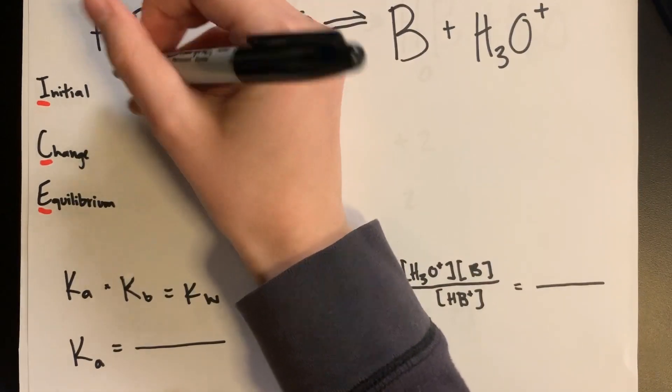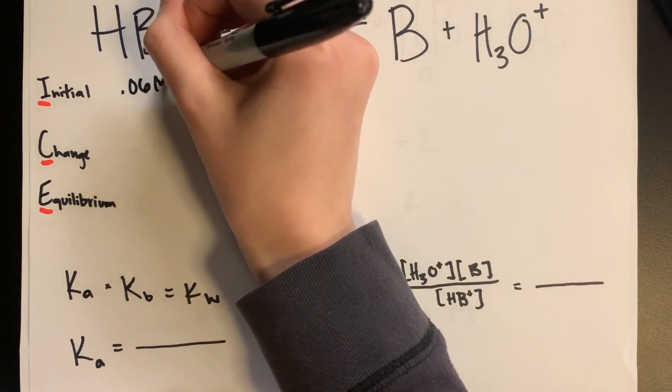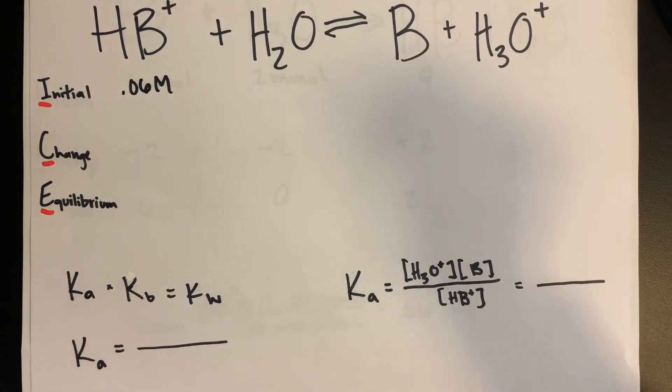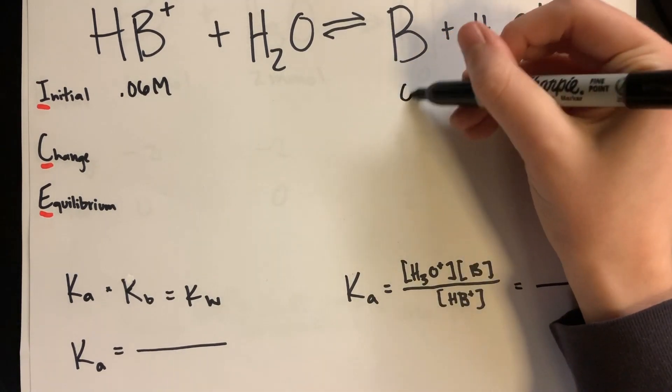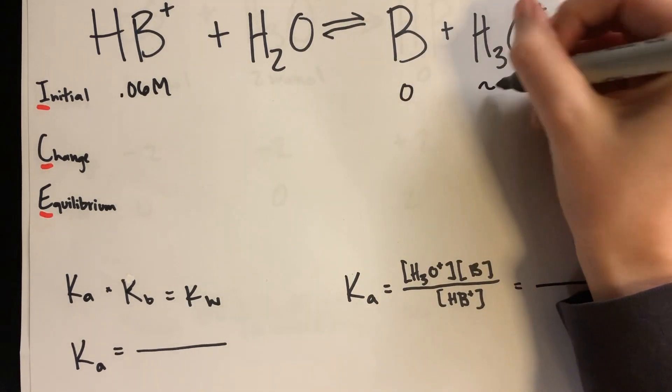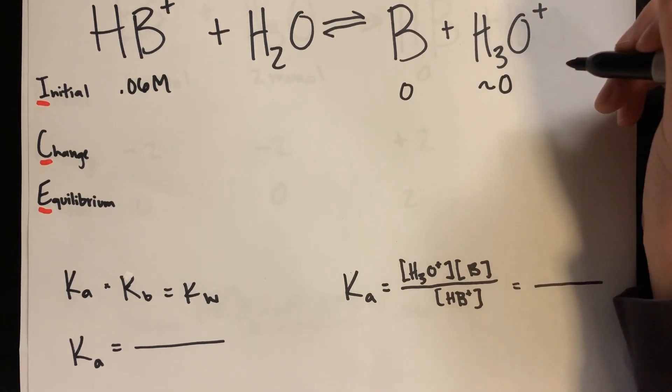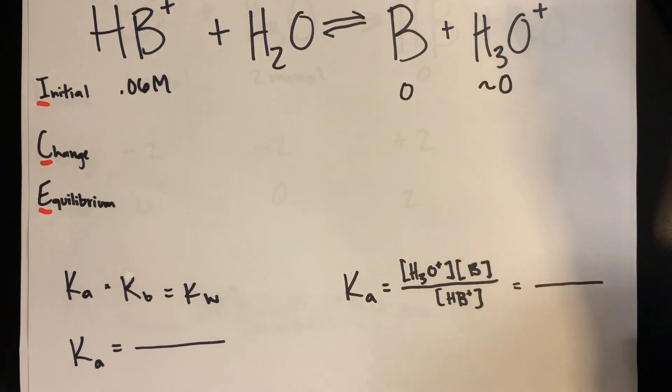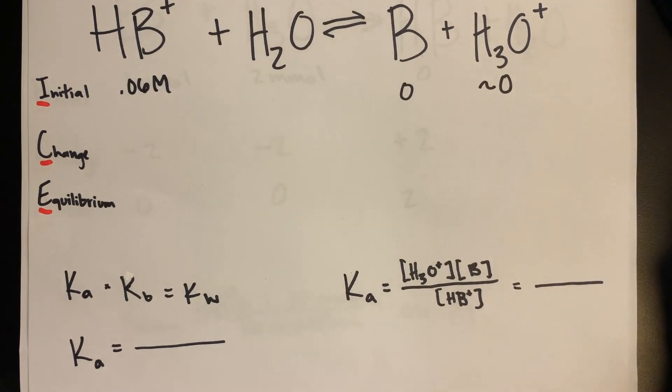It's going to be 0.06 molarity for the weak acid, and 0 for the conjugate base, and approximately 0 for the hydronium ion concentration, since it really is 10 to the negative 7, which is a very small number.